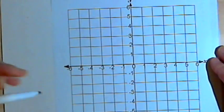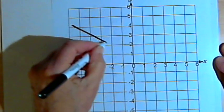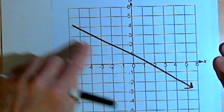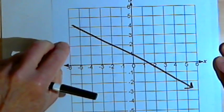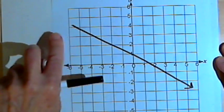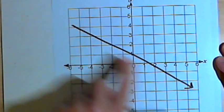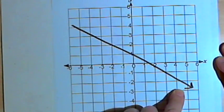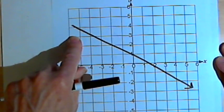For decreasing function, we've got the opposite thing happening. As we move from left to right, the graph would be going downward, going down towards the bottom of the page. So we're always talking about what happens when we go from the left side of the graph to the right side of the graph, from the negative x values to the positive x values. If we move down along that graph towards the bottom of it, then we've got a decreasing function.